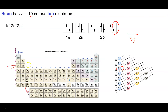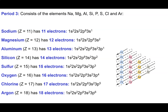Neon is element 10: 1s² 2s² 2p⁶, finishing off the 2p subshell. After neon we move into the third period — sodium through argon. Sodium (11 electrons) adds 3s¹, magnesium (12) completes 3s². Aluminum (13) is 1s² 2s² 2p⁶ 3s² 3p¹. Then silicon adds 3p², phosphorus 3p³, sulfur 3p⁴, chlorine 3p⁵, and argon finishes with 3p⁶.